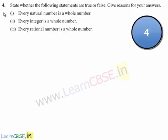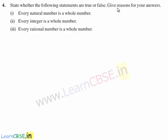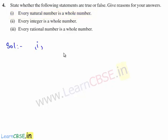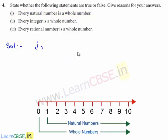Now let's move on to the fourth question: state whether the following statements are true or false and give reasons for your answers. The first statement is: every natural number is a whole number. The statement is true because the set of natural numbers starts with 1 and the set of whole numbers starts with 0. Hence the natural number set is included in the whole number set. Therefore, every natural number is a whole number, and the first statement is true.